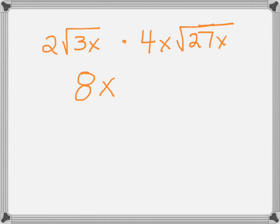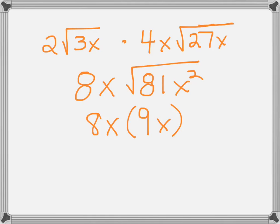And then we multiply the terms inside the radical. 3 times 27 is 81, and x times x is x squared. Next we simplify the term under the radical, giving us 8x, and then the square root of 81 is 9, and the square root of x squared is simply x. Multiplying these two terms together we get 72x squared.